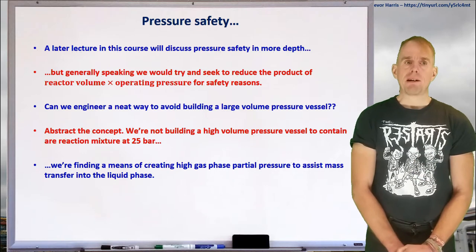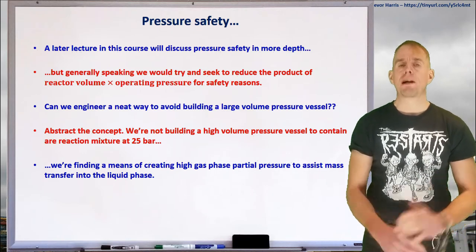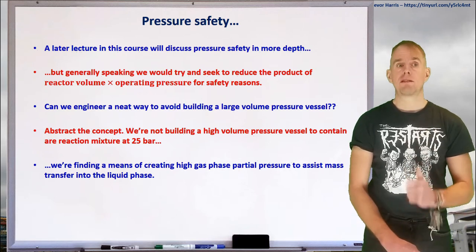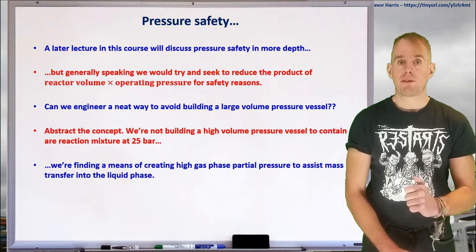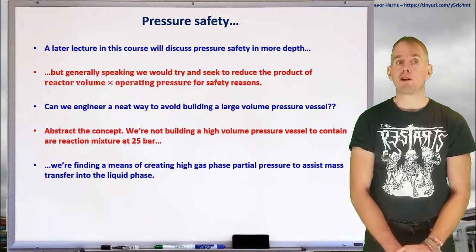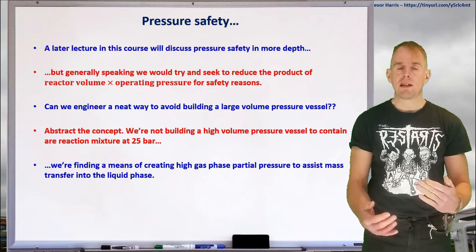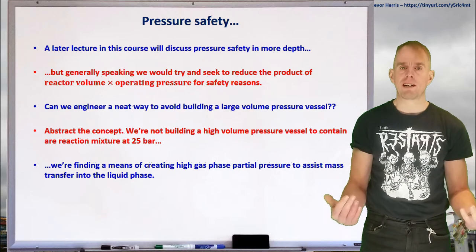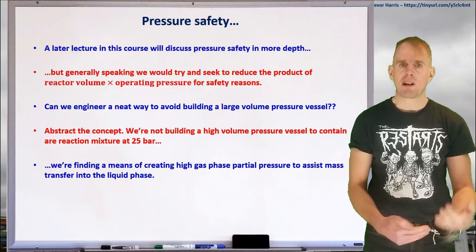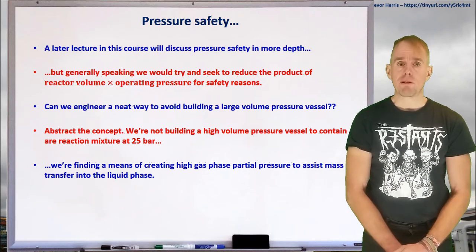The first thing to think about is pressure safety. A later lecture in this course is going to discuss about all aspects of pressure safety in a lot more detail but the salient point that we need to remember now is that a good rule of thumb is to try and reduce the product of reactor volume × operating pressure for reasons of safety. And so at first sight if we want to create a large chemical reactor at high volume it's in complete odds of this rule of thumb. Both the pressure's high and the volume's high therefore the inherent safety of the process looks very poor.